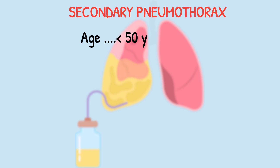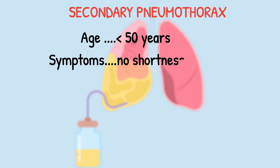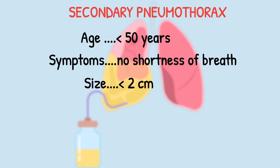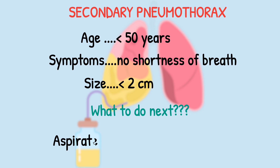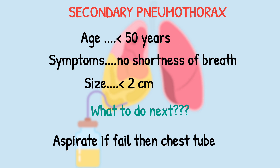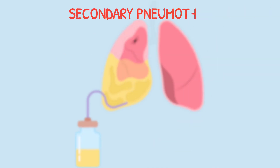If the age is less than 50 years old, the patient has no shortness of breath, and the size is less than two centimeters — we still intervene. Aspirate first; if that fails, insert a chest tube. There must always be intervention.